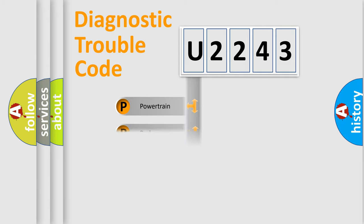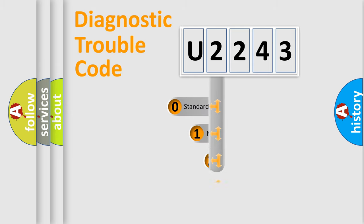We divide the electric system of automobile into four basic units: Powertrain, Body, Chassis, and Network. This distribution is defined in the first character code.